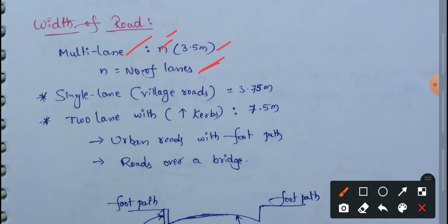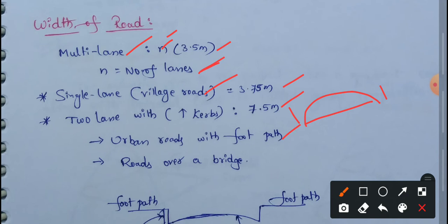And then single lane roads, and then village roads. The village road has a width of 3.75m.